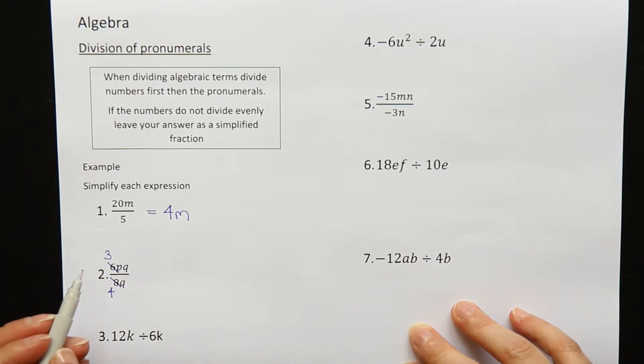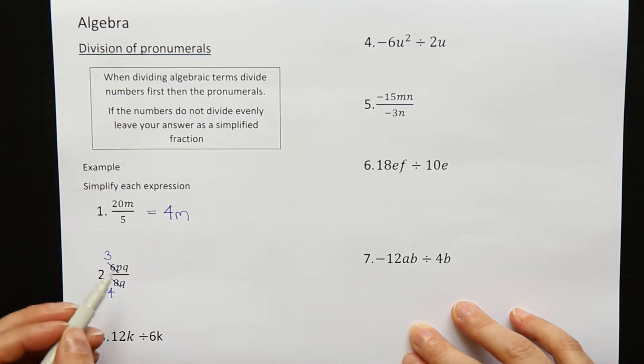My numbers are simplified. I also want to divide my letters, or in this case, cancel my letters. If there is a q on the top, it can cancel off a q on the bottom.